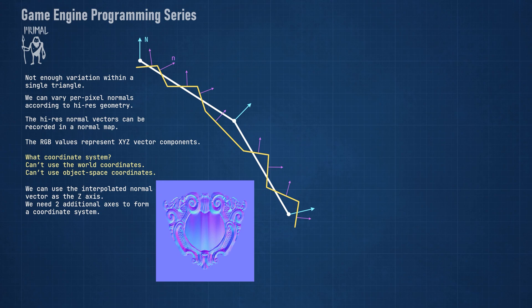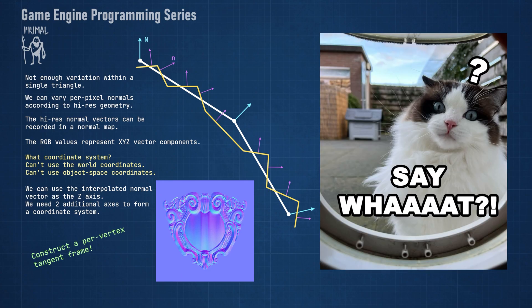Using the UV coordinates, we can construct two perpendicular vectors on the plane of a triangle. Since these are parallel to the triangle, they are called the tangent and bitangent vectors. We can use tangent and bitangent vectors together with the interpolated normal vector to form a tangent frame. Don't worry, I'll try my best to explain.